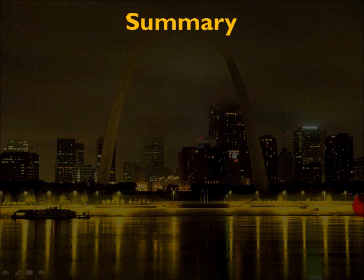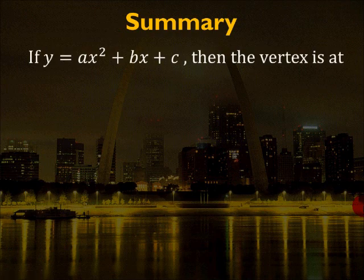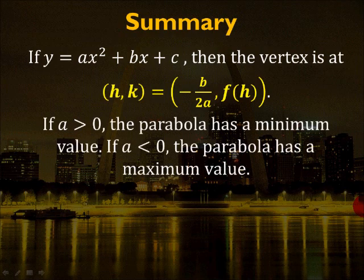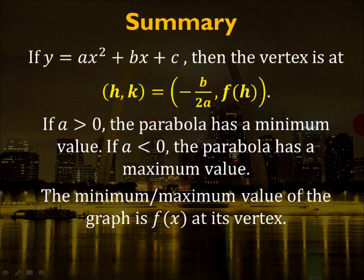Here's a summary. If y = ax² + bx + c, the vertex is at (h, k) where h = -b/(2a). Plug h back in to find k. If a > 0, the parabola has a minimum because it opens upward. If a < 0, it has a maximum because it opens downward. The minimum or maximum value is f(x) at the vertex. The range plays off the minimum or maximum. To find zeros, plug in 0 for f(x) and solve for x. That's it for section 76.